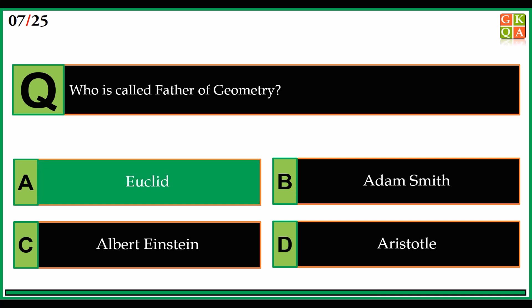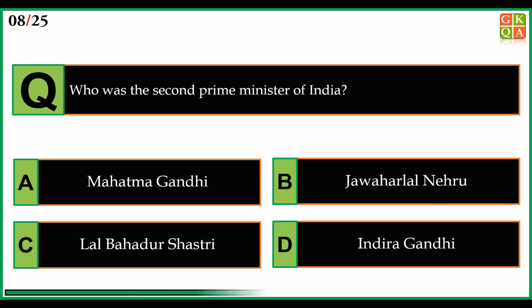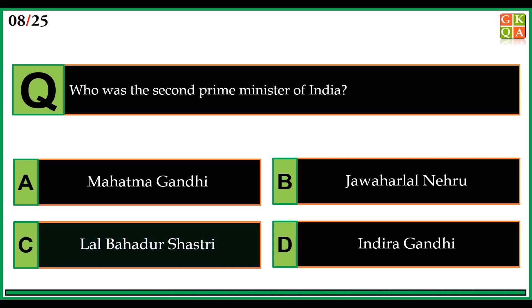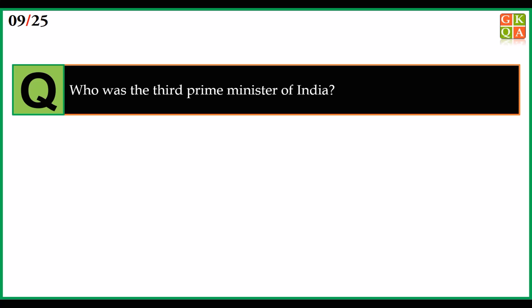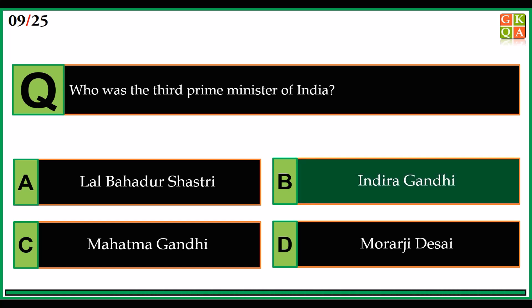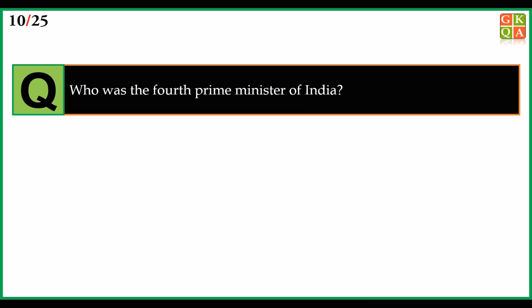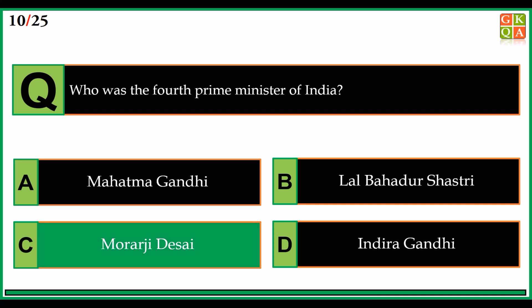Who is called father of geometry? Answer: option A, Euclid. Who was the second Prime Minister of India? Answer: option C, Lal Bahadur Shastri. Who was the third Prime Minister of India? Answer: option B, Indira Gandhi. Who was the fourth Prime Minister of India? Answer: option C, Morarji Desai.